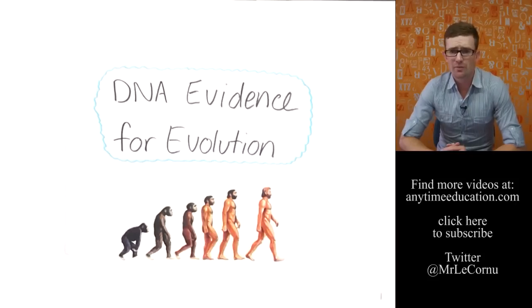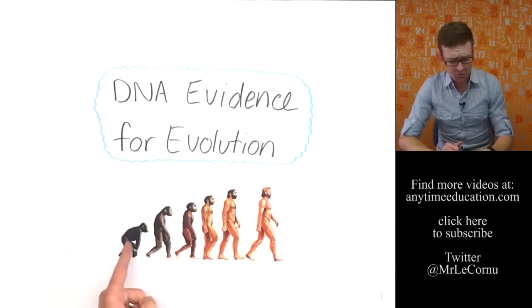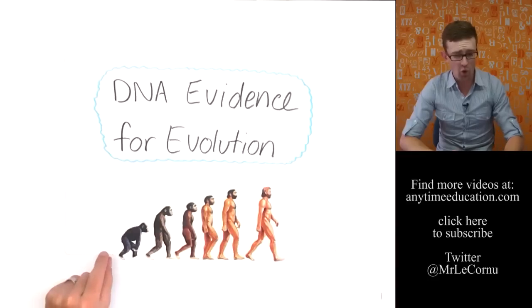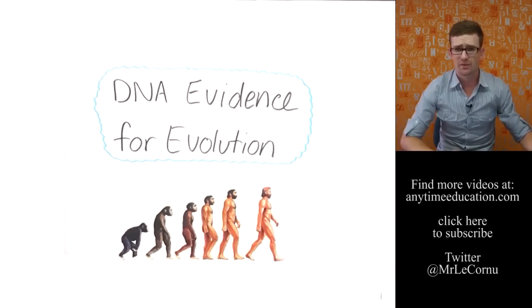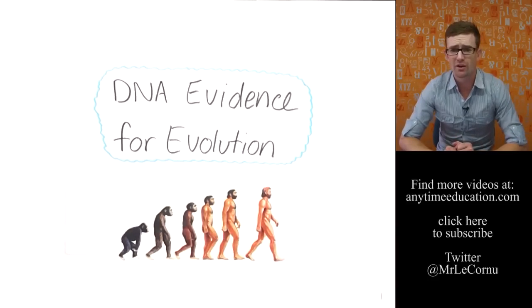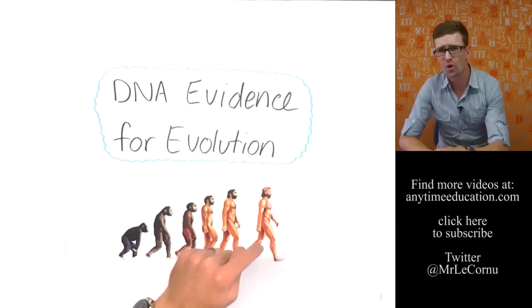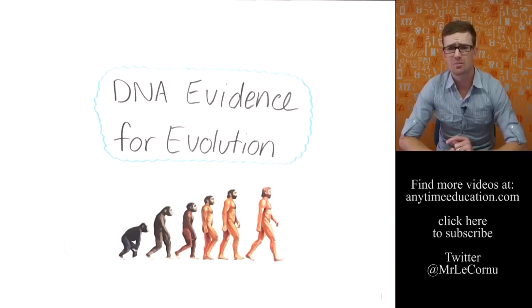And so there we have it. That's our DNA evidence for evolution. And as you can see, we actually go much, much further back than this primate here, but we go all the way back to simple prokaryotic cells 3.5 billion years ago. All life, not just humans, but all life on Earth today can be traced back to that single origin.